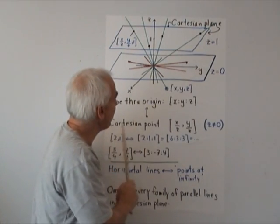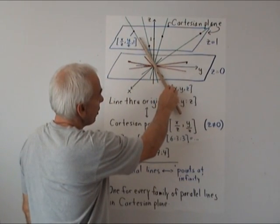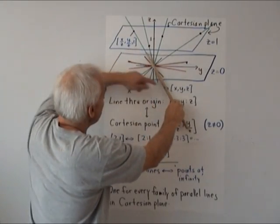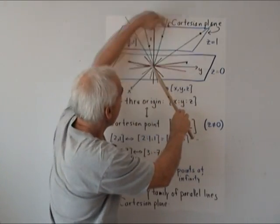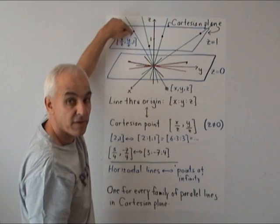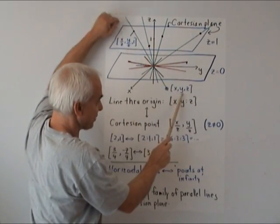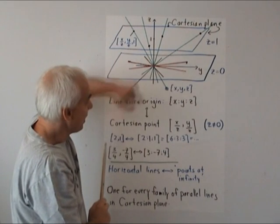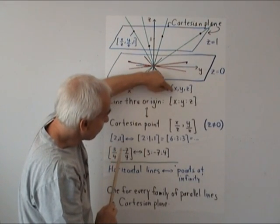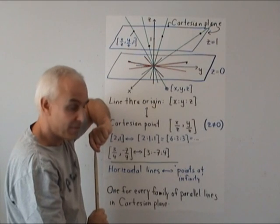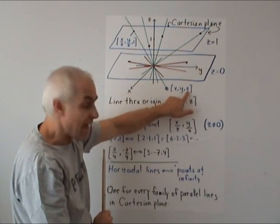It's parallel to the plane z equals zero, which is the xy plane, but moved up one in the z direction. The reason it's important is because any line through the origin which is not horizontal is going to intersect that reference plane in a unique point. For example, this line here which goes through the point (x,y,z).